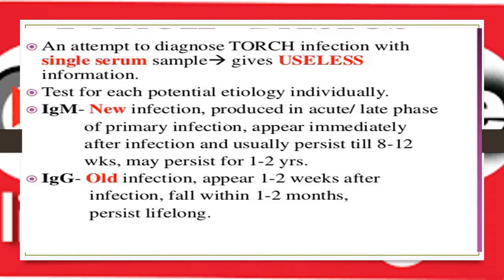The idea behind TORCH serology involves IgM and IgG. IgM indicates a new infection — it is produced in the acute or late phase of primary infection, appears immediately after infection, and usually persists two to three months, sometimes up to one to two years. IgG represents old infection; it appears one to two weeks after infection, falls within one to two months, and persists lifelong.